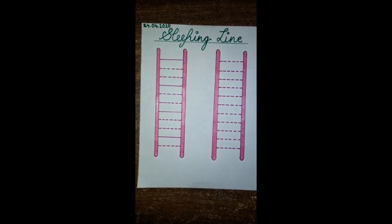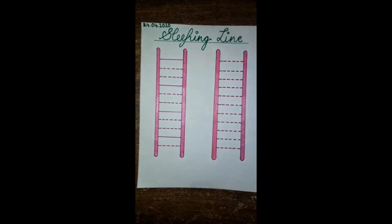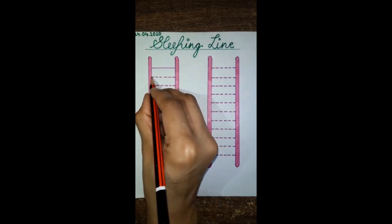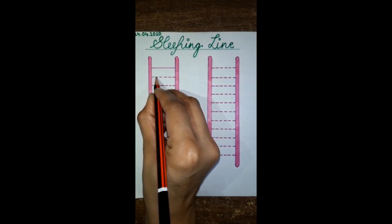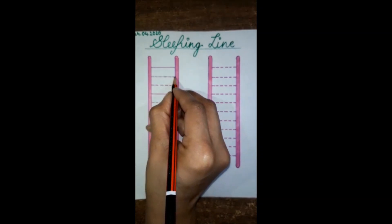Is it clear? Now let's start with the sleeping line. Here I have two ladders and both the ladders are broken. We will now try to fix the ladders. Start from the left and slowly slowly move towards your right.